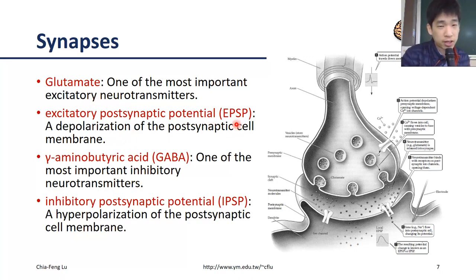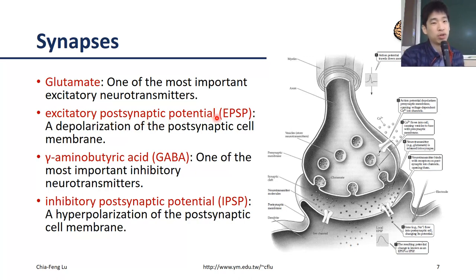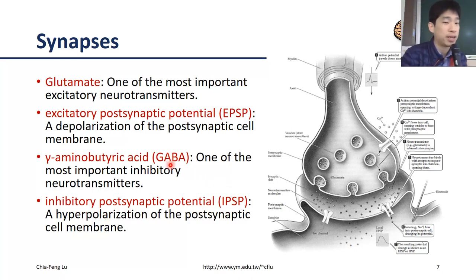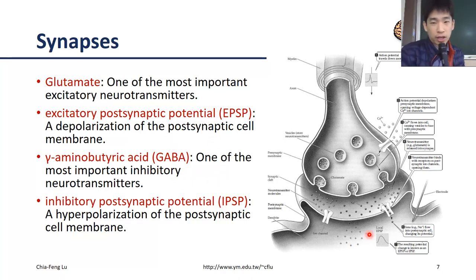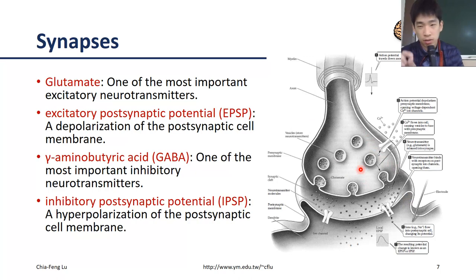There is a term associated with glutamate: EPSP, excitatory postsynaptic potential, which is induced by glutamate. In the following slides we will zoom into these pictures to look in detail at how neurotransmitters function on synapse structures.